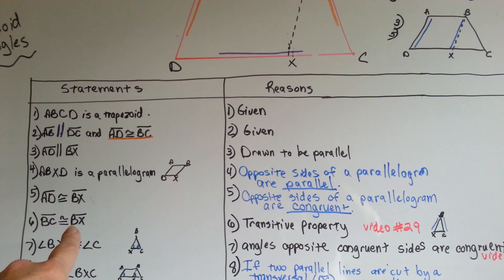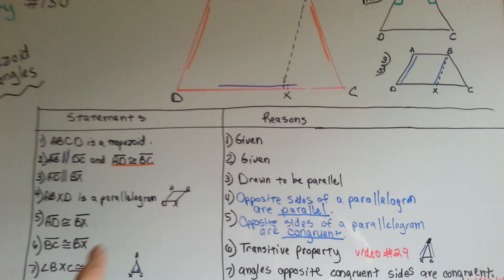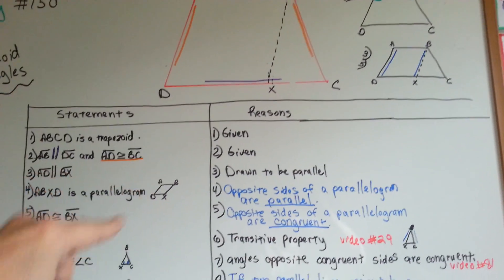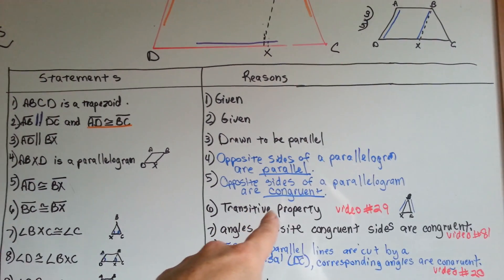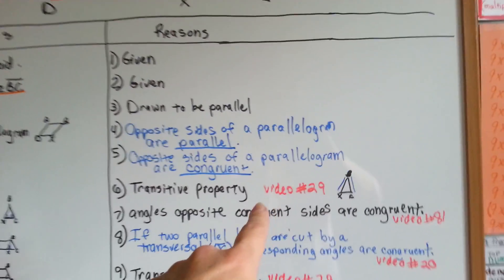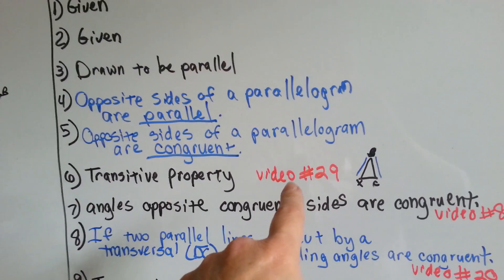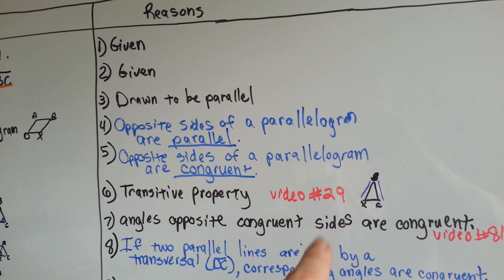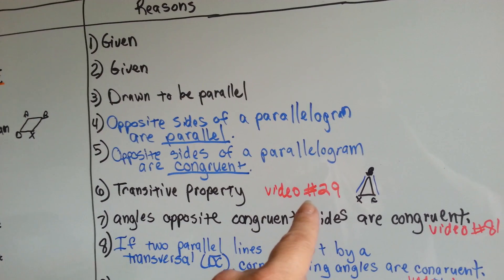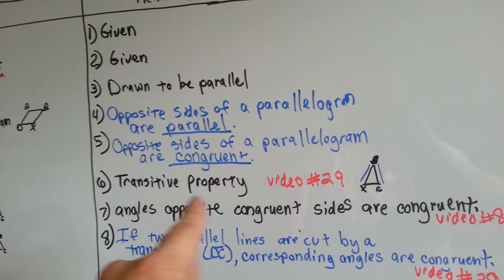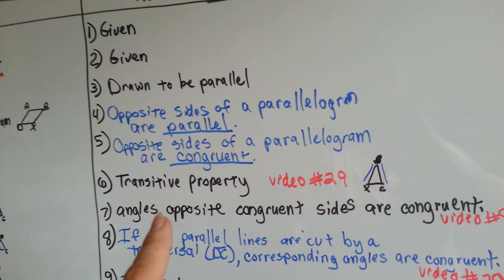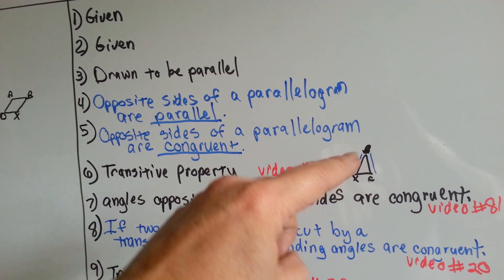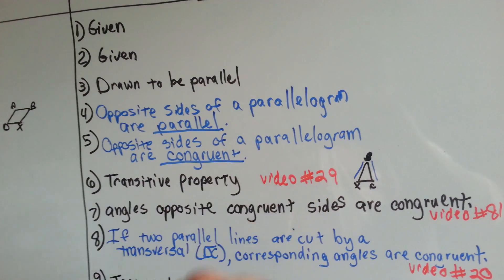BC is congruent to BX. That's the transitive property — if you don't remember what that is, it was covered in video number 29. You can go back to geometry number 29 to learn about the transitive property, or look it up in your textbook or online. It's saying that BC is congruent to BX.